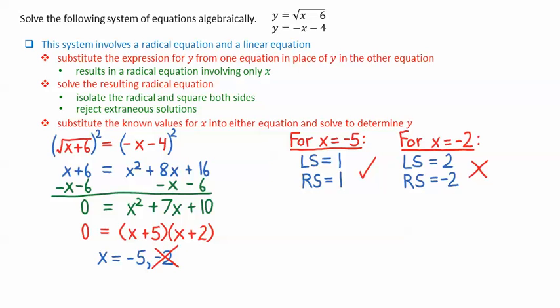We then need to find the y value corresponding to an x value of negative 5. I will substitute into the second equation, which is the linear equation. Substituting x equals negative 5, we get a y value of 1. This means that the solution to this system is the point negative 5 comma 1.